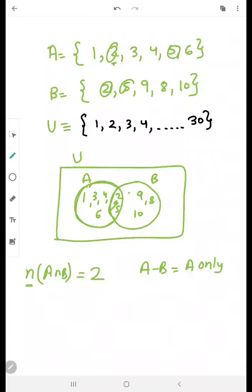In the questions, you will read this kind of word, A only or A minus B. They are having same meaning. So A only means the elements which are not common with A. Those elements we cannot take. So like here 2 and 5 are common elements, we will not take them.